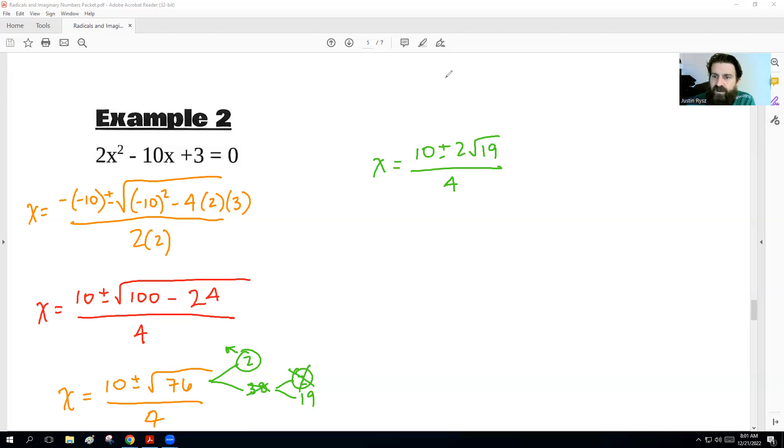So x equals 10 plus or minus 2 radical 19 over 4. And over 4. Okay, so then we're going to go through, we got it broken down, we're going to just see our outside numbers. Can we divide them all? Yep, we can divide them all by 2. So the answer is 5, plus or minus 1, or just radical 19, over 2. There's the exact answer. It probably equals some decimal, but really, we're working on exact solutions here.